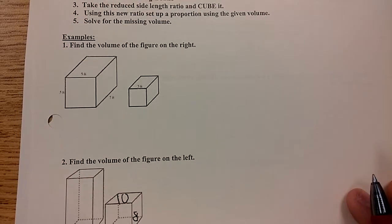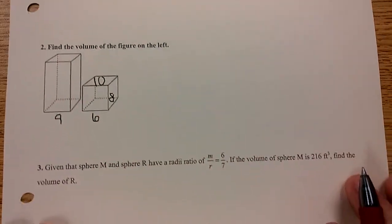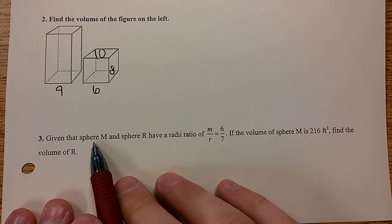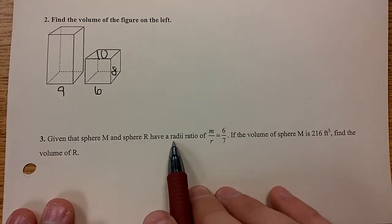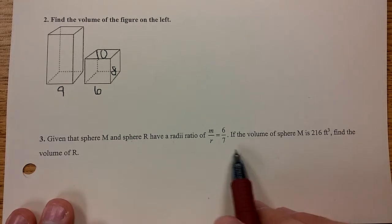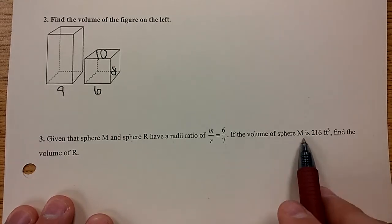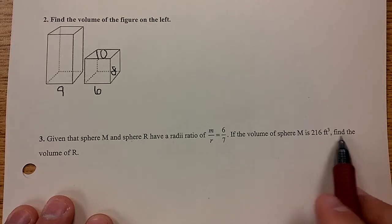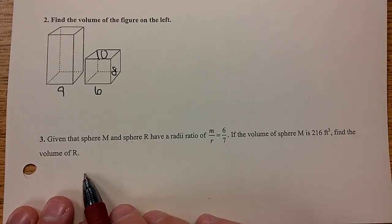So in this example here, number 3, given that sphere M and sphere R have a radii ratio of M over R, or 6 over 7, if the volume of the sphere M is 216 cubic feet, find the volume of the R sphere.